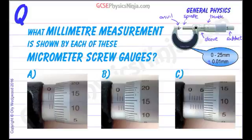So here we've got three readings off the sleeve, which is this part here, and the thimble, which is this part there. We need to be able to take those readings, so let's do that now.